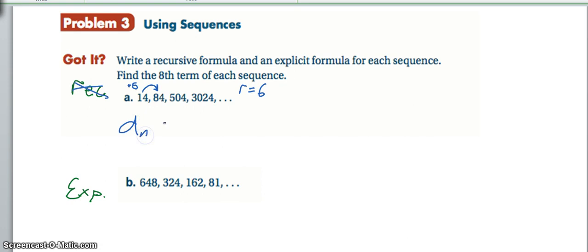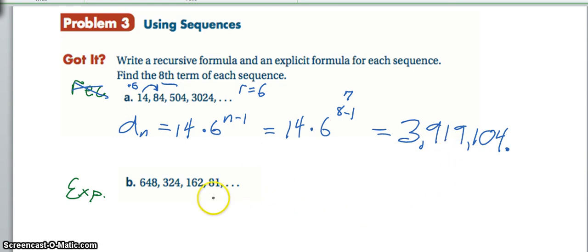So we'll set up a to the n equals our first term, 14, times our ratio of 6 to the n minus 1. And n here is going to be 8. So now we can say this is 14 times 6 to the 8 minus 1, or 7. So that's really 6 to the 7th times 14. So see what you get with that. We get 3,919,104.